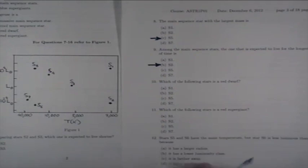Because it has the smallest mass. It has the lowest luminosity, therefore lowest mass. Therefore, it's going to live for the longest period of time. Which of the following stars is a red dwarf? S2.